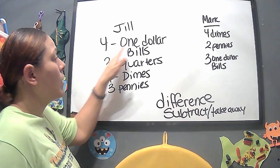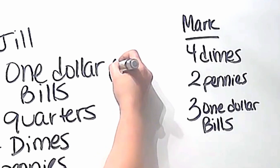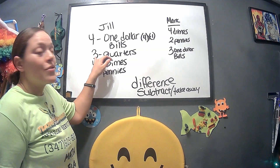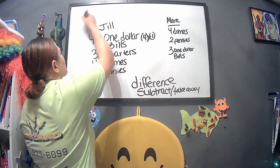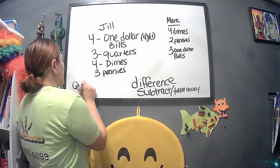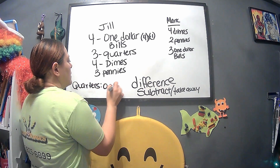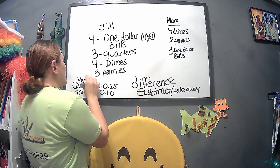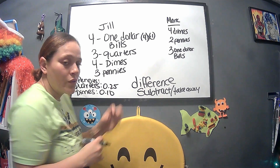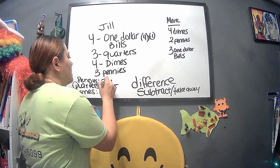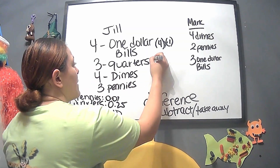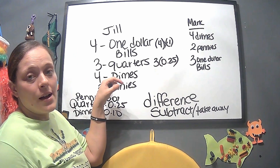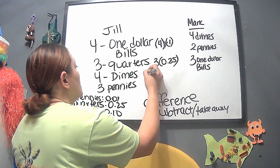For Jill, we have four one-dollar bills, so we do four times one. We have three quarters, so we do three times 0.25. We have dimes — that's our coins we're working with. We have three quarters, so three times 0.25, and we have dimes which are 10 cents, so four times 0.10.